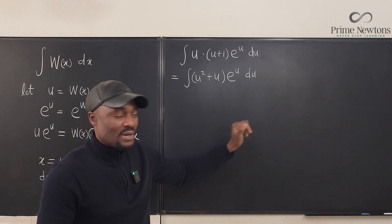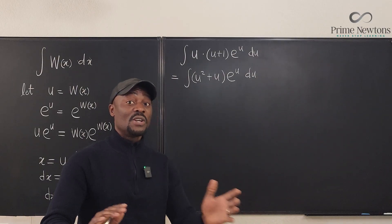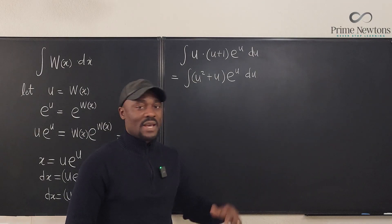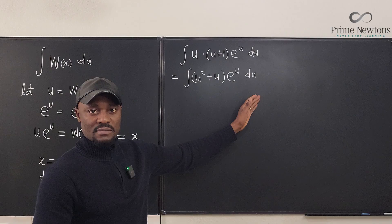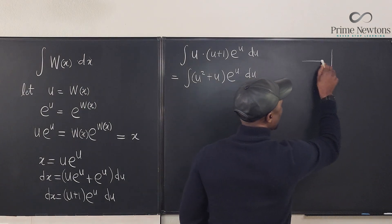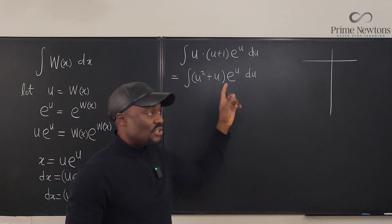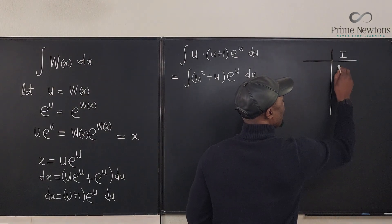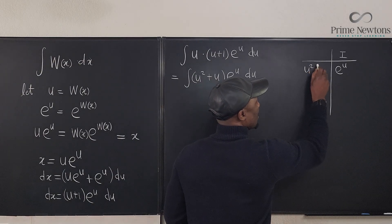Okay, so integration by parts, we're going to use the DI table. Always use the DI table unless you're instructed to not use it. If you don't know what the DI table is, then you haven't learned integration by parts. I'll leave the link in the description. Here we go. Let's try to integrate this and we're going to get our answer immediately. We're going to have a table here. So whenever you have a polynomial multiplying an exponential function, differentiate the polynomial, integrate the exponential function. So we're going to integrate the exponential function e to the u, and we're going to differentiate the polynomial u squared plus u.